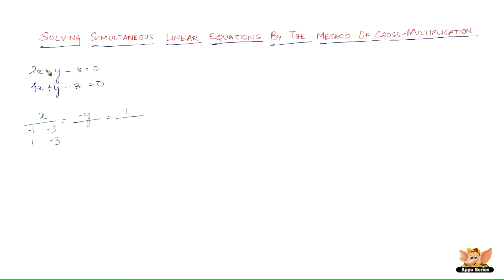Below minus y, leave the coefficients of y and take the rest — for x it is 2 and 4, and the constants are minus 3 and minus 3. For 1, leave the constants and take the rest: the coefficients of x are 2 and 4, and the coefficients of y are minus 1 and plus 1. Now cross multiply in the form of a ribbon.